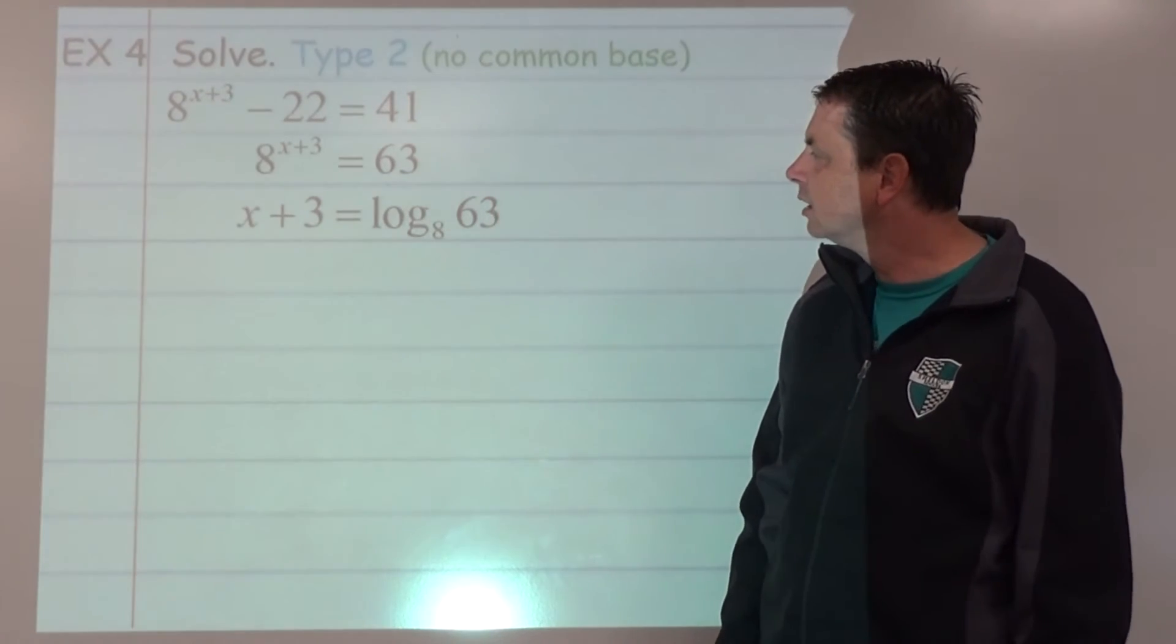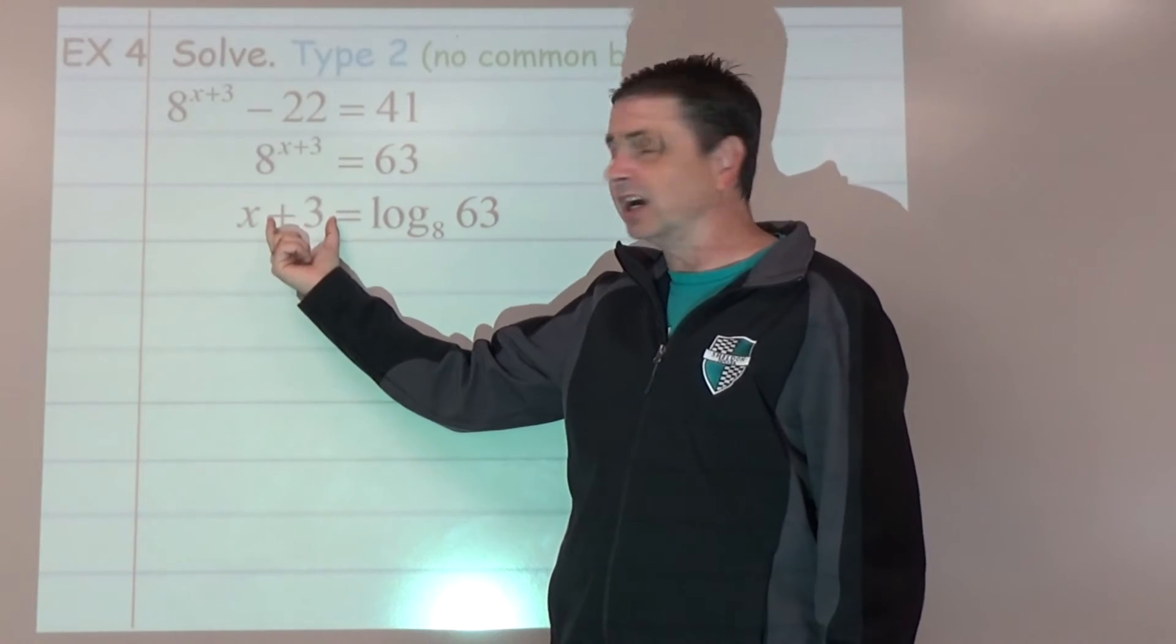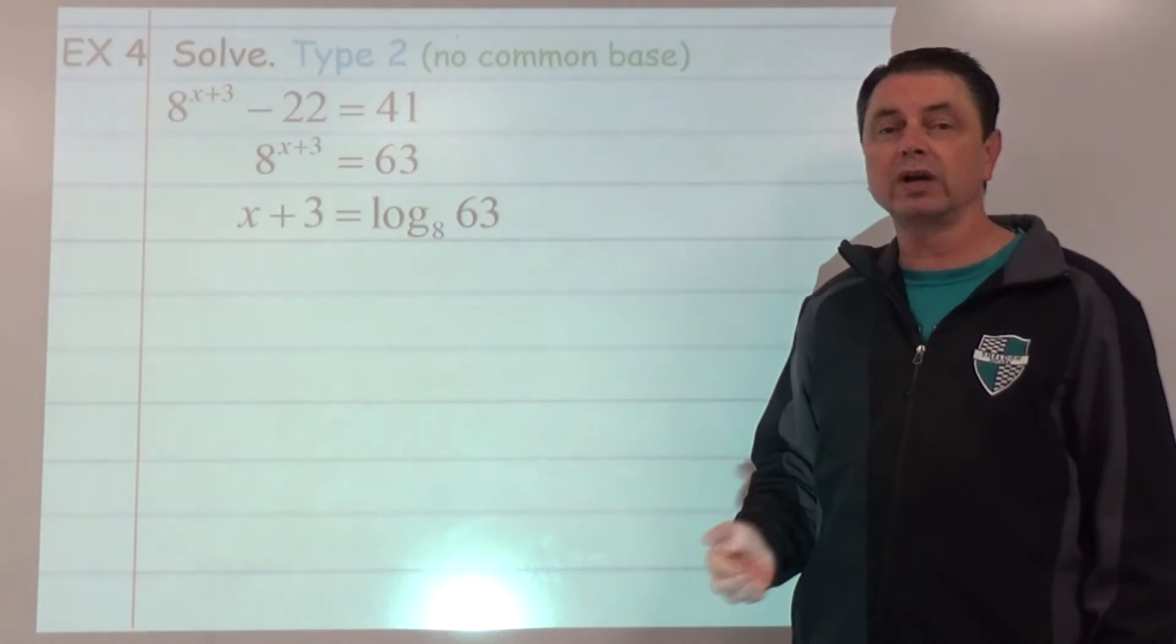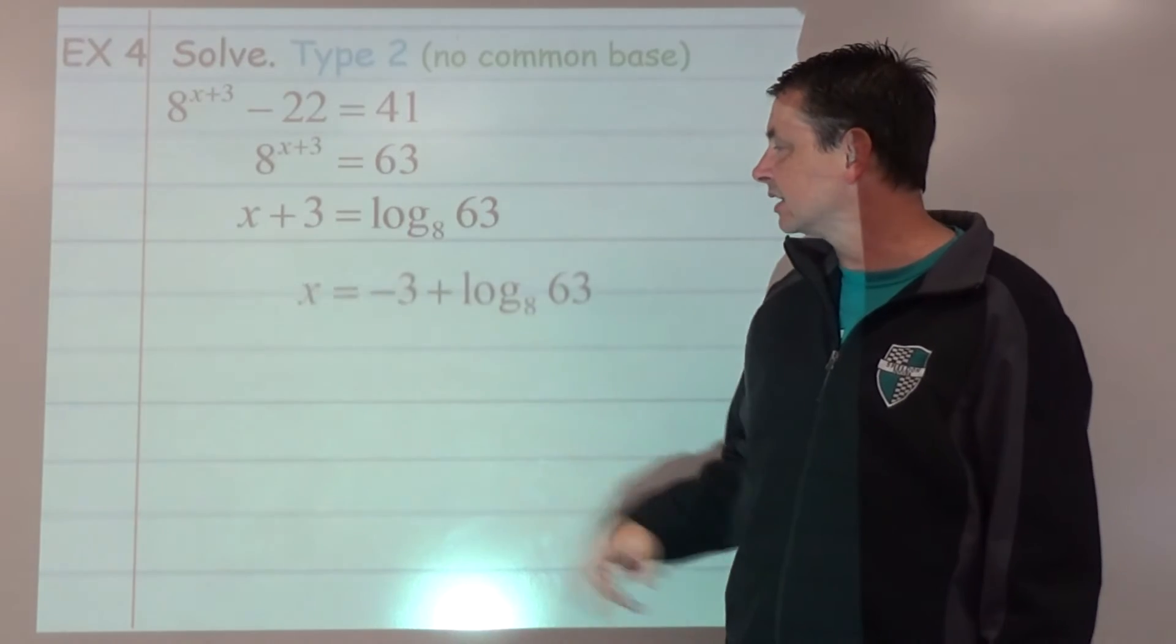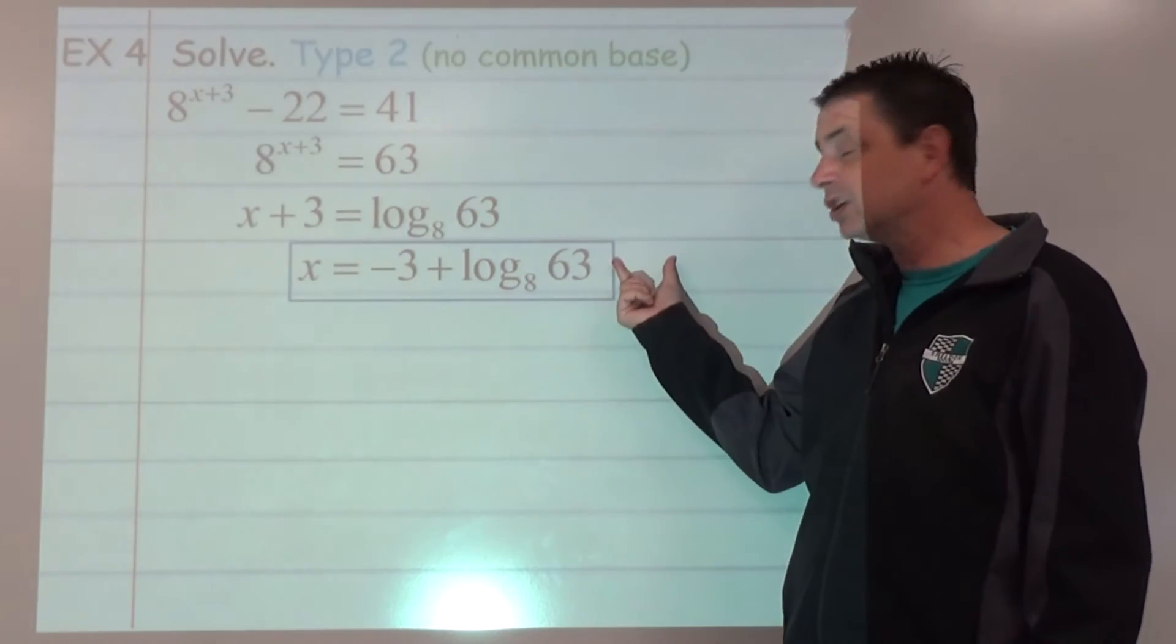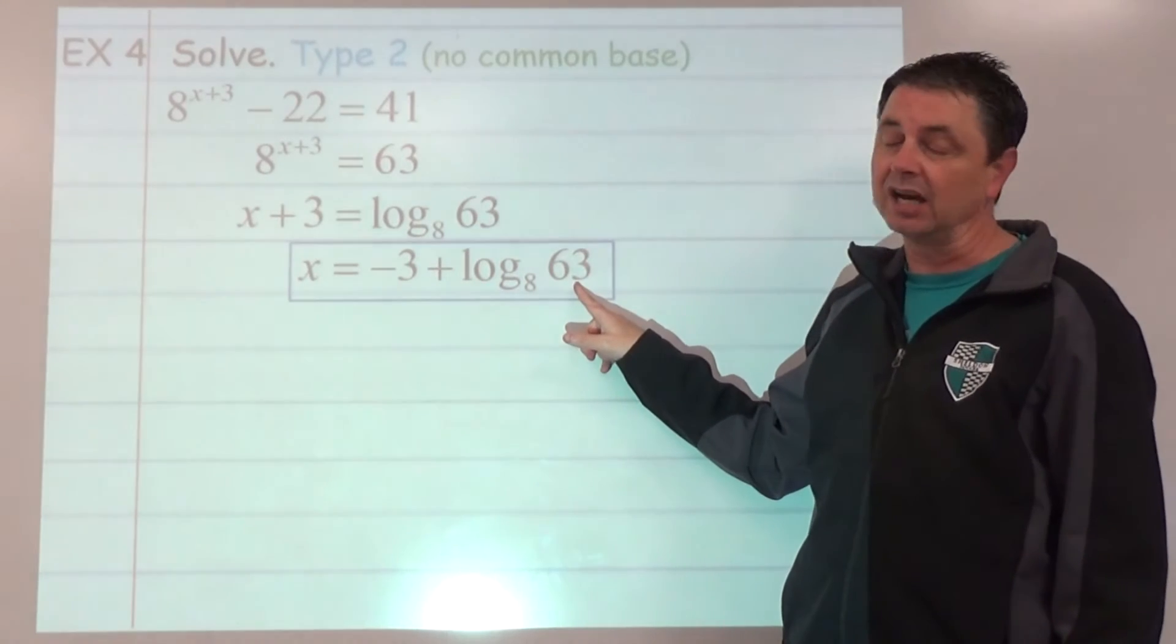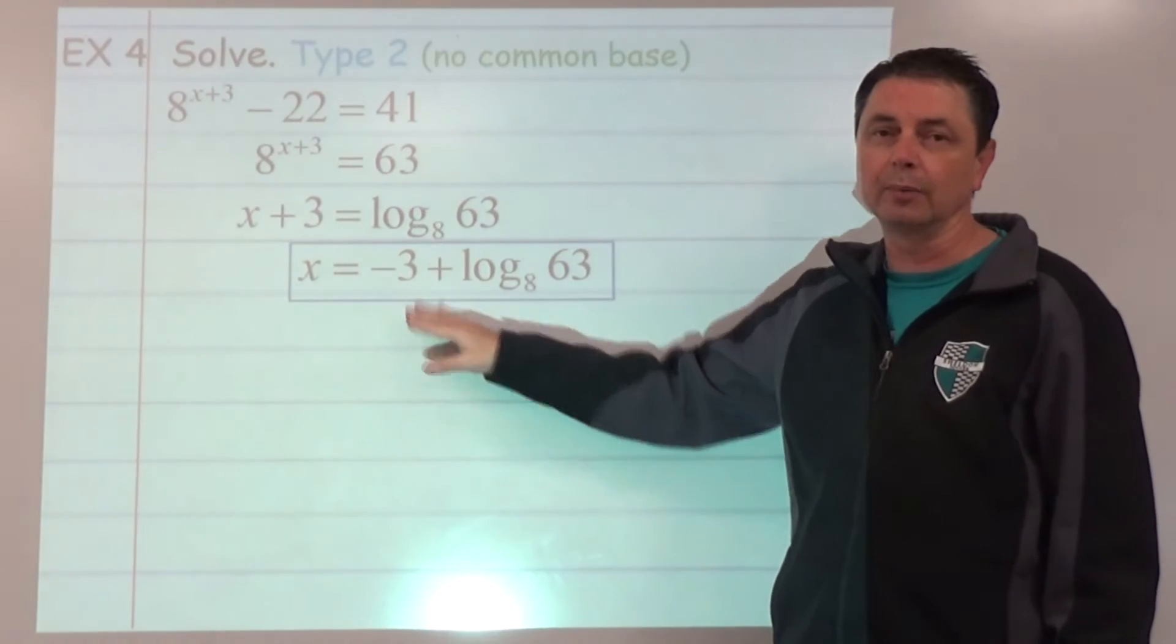So now we're going to isolate the x. We're going to undo the plus 3. We'll subtract 3 from both sides. Like when we were doing completing the square with the square root method, probably safest to do it in front. It's negative 3 plus log base 8 of 63. You can do it in the back, but it gets confusing whether we should do 63 minus 3. We should not because this is log base 8 of 63.